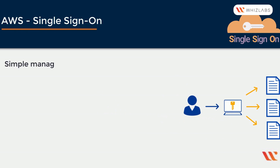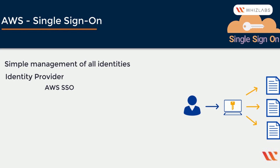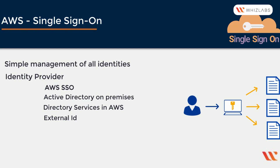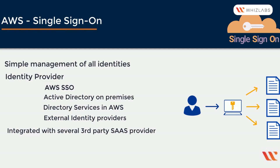AWS SSO makes it simple to manage single sign-on for all your AWS accounts in your organization. Your identity provider can be either AWS SSO itself, or you can have your on-premise Active Directory hosted on your premises, or the directory services hosted in AWS. You can also have identity providers in any other external provider's facility, so you may be using an identity provider like Oracle IDM or Novell IDM.